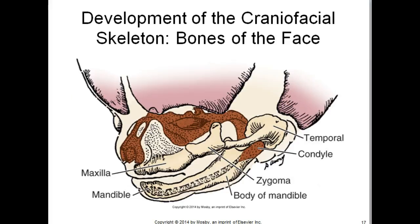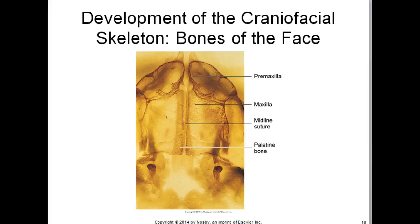This image shows the facial skeleton at the twelfth prenatal week. The bony mandible grows laterally and posteriorly to join the bony body of the cartilaginous condyle. Together, the body of the mandible and the condyle replace Meckel's cartilage. To form the palate, the maxillary bones grow medially into the palate to support the palatine shelf tissue and will continue to grow as the facial tissue develops. The height of the maxilla is due partially to the growth in length of the roots of the teeth. This image is at eight months.